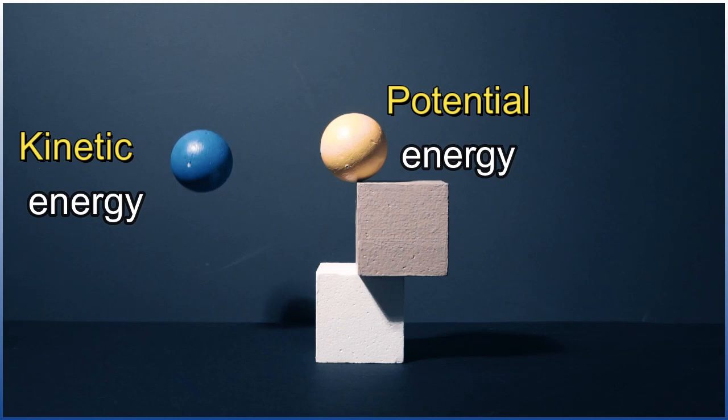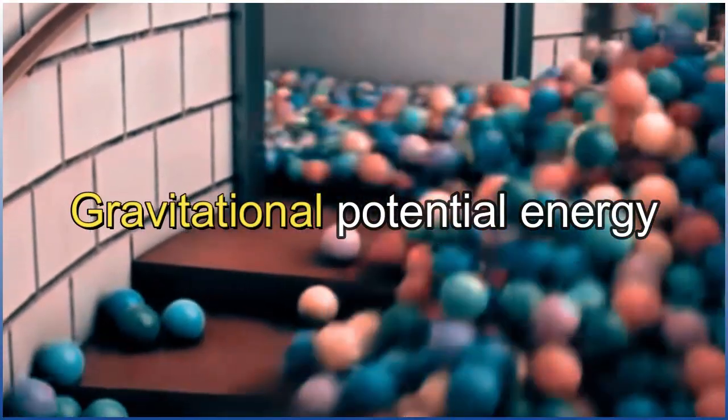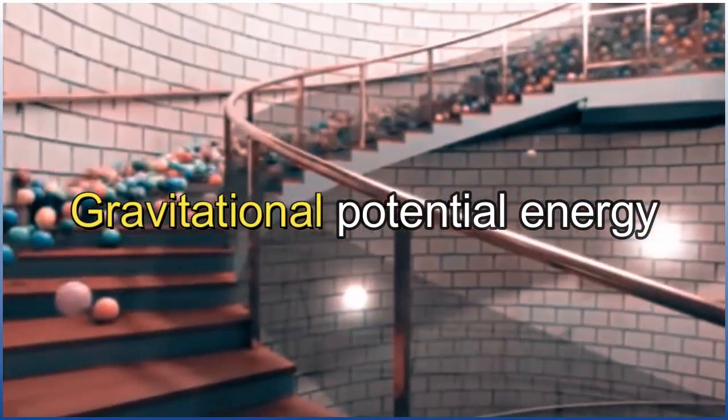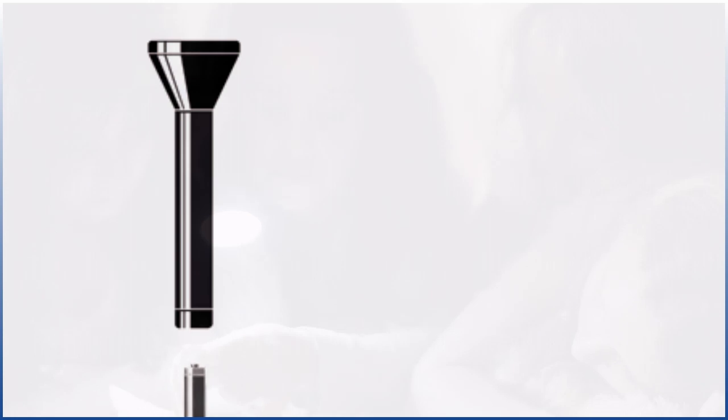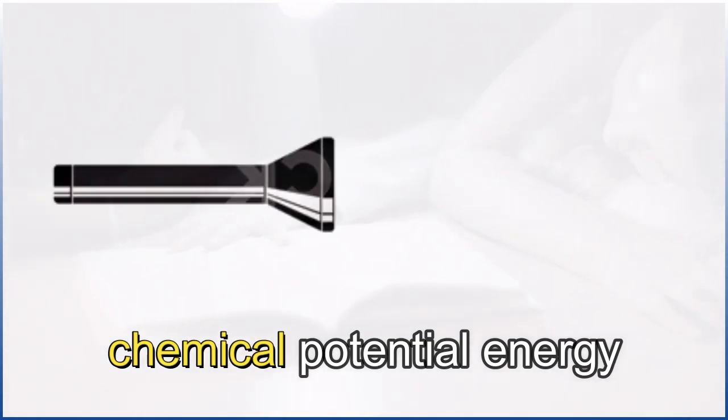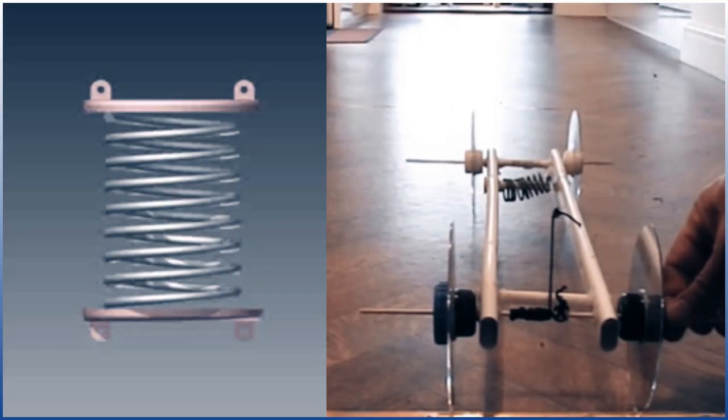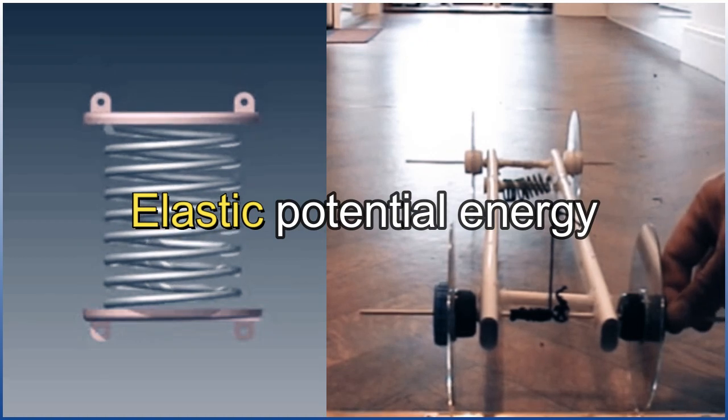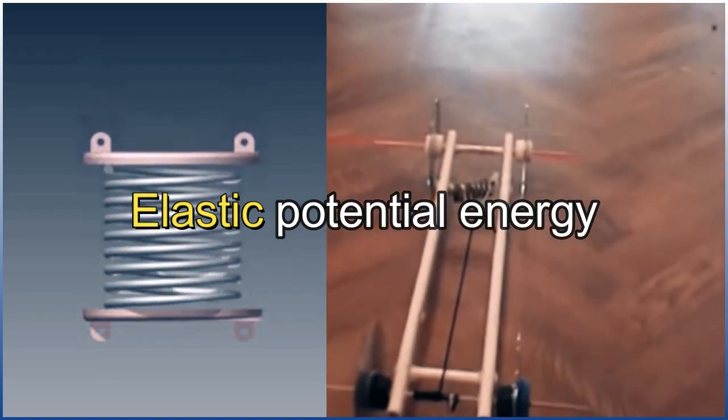You have already learned about several types of potential energy. For example, a ball at the top of a hill has a type of potential energy called gravitational potential energy because it could roll down the hill. Batteries have potential energy in the form of stored chemical energy that is not used until the battery is connected to something. A compressed spring has potential energy that could suddenly be released if you are not careful.